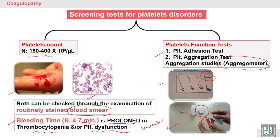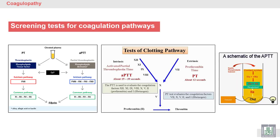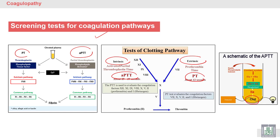Screening tests for the coagulation pathway: we have two important tests — PT and PTT. PT is used to check the extrinsic pathway and PTT is used for the intrinsic pathway. Both tests depend on adding a reagent to the plasma and detecting the time for formation of the clot.